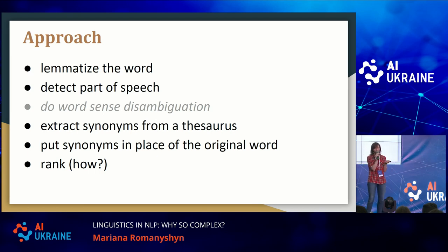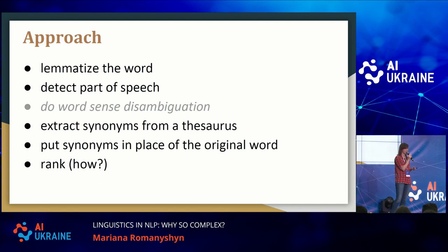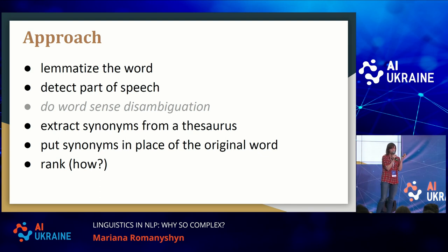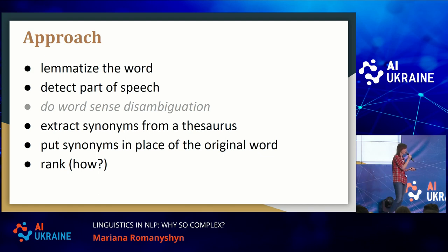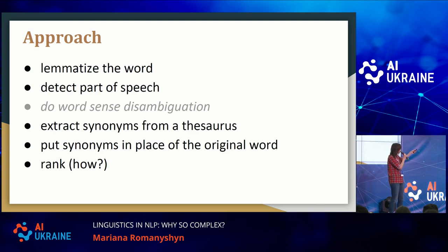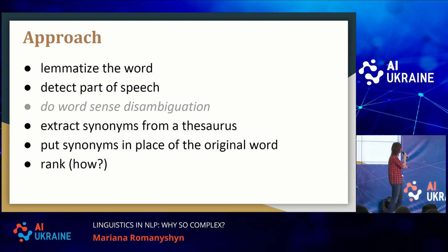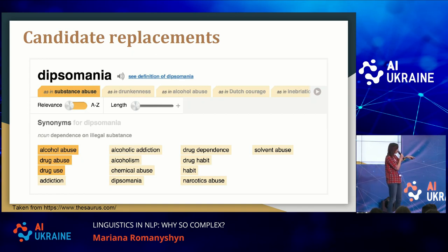Now we've identified our complex words — how do we simplify them? The simplest thing is to lemmatize the word. We take the part of speech of the word identified by our POS tagger, because the synonyms for "mouse" as a verb would be very different from synonyms of "mouse" as a noun. Some words can have multiple meanings, so we should choose synonyms for the specific meaning — that's called word sense disambiguation, which is a topic on its own. Then we extract synonyms from the thesaurus, put them in the place of the original word, and rank them.